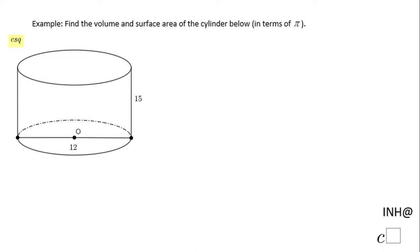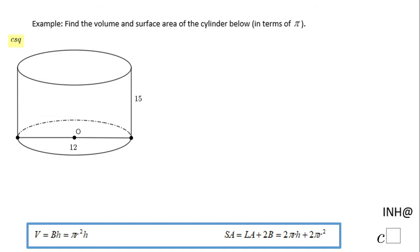Welcome or welcome back, I need help at C squared. In this example we need to find the volume and the surface area of this cylinder. These are the formulas we can use. The first one is volume.